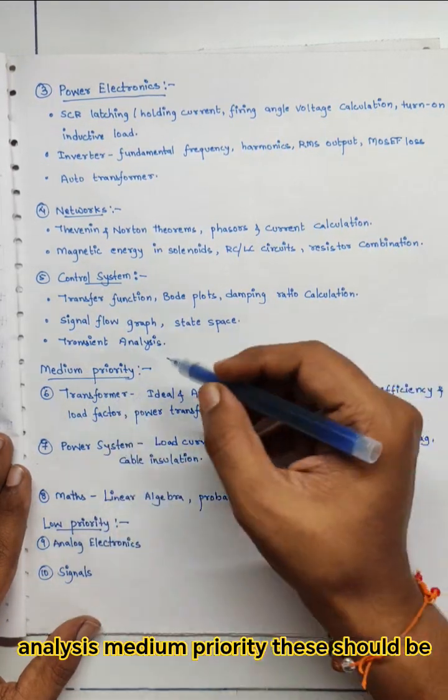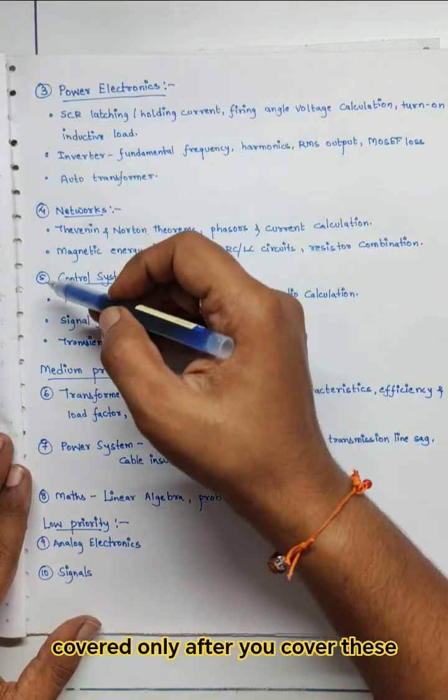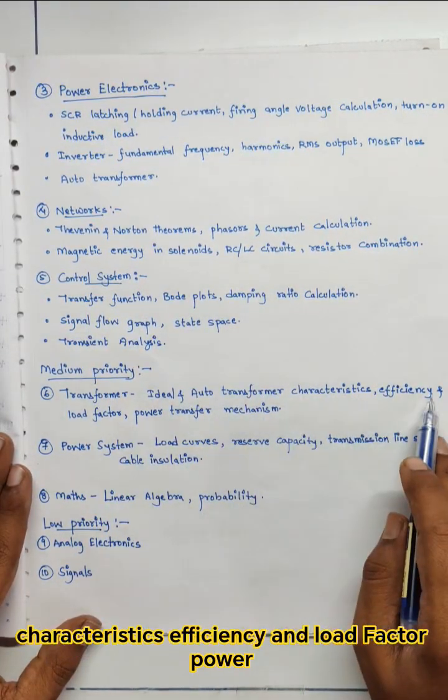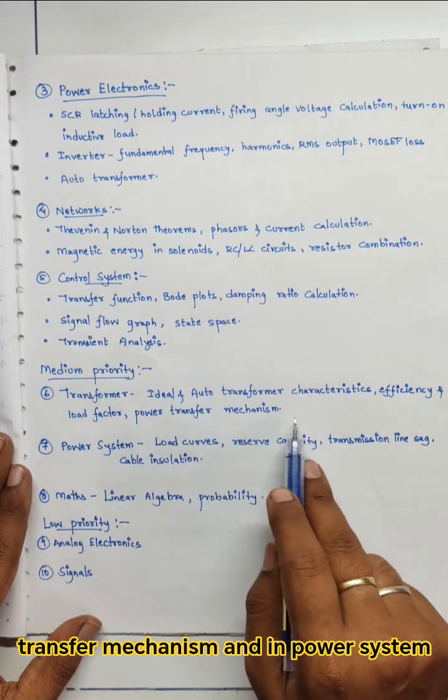Medium priority, these should be covered only after you cover these five high priority subjects. So transformer from which ideal and auto transformer characteristics, efficiency and load factor, power transfer mechanism.